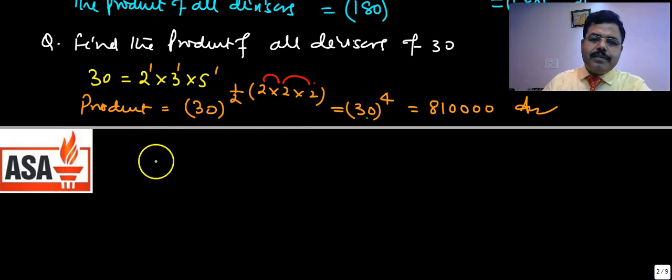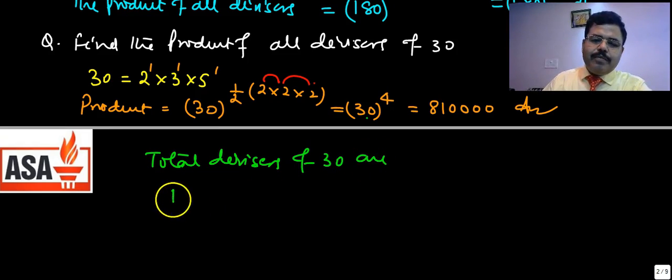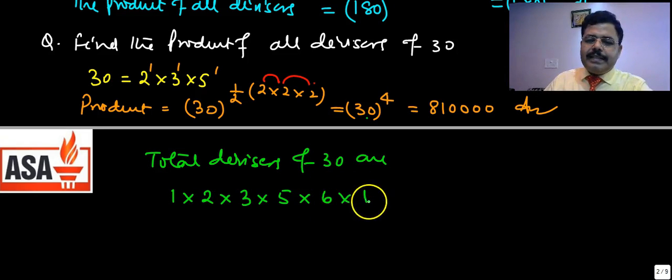1, 2, 3, 5, 6, 10, 15, and 30. Are they 8? Yes.